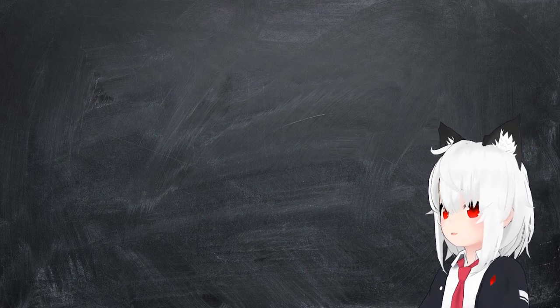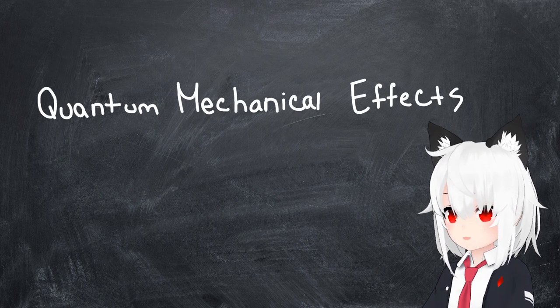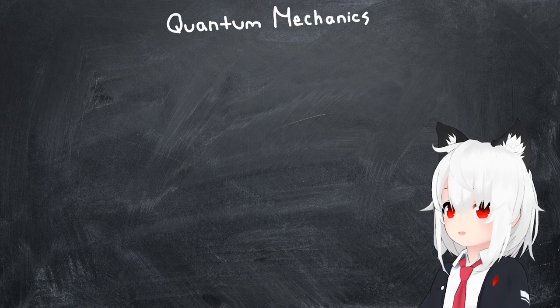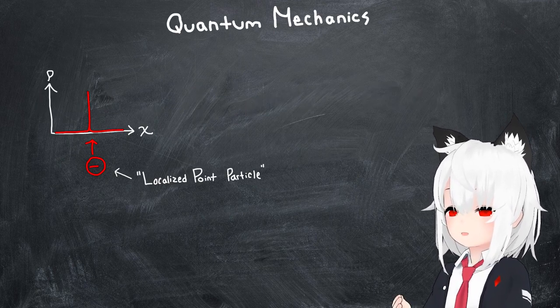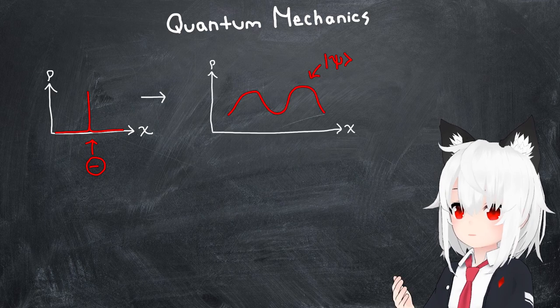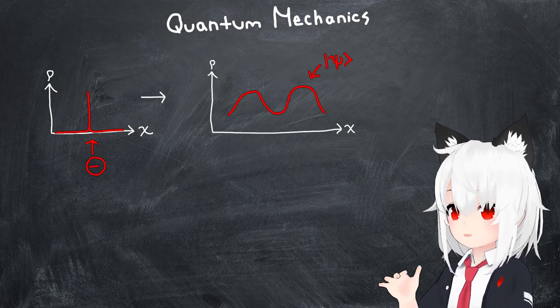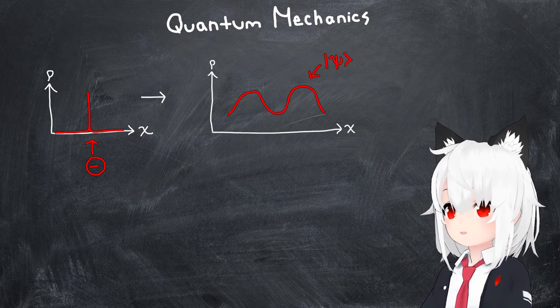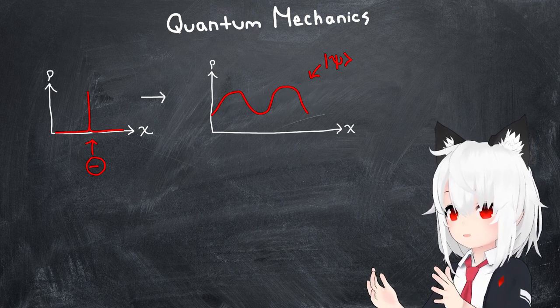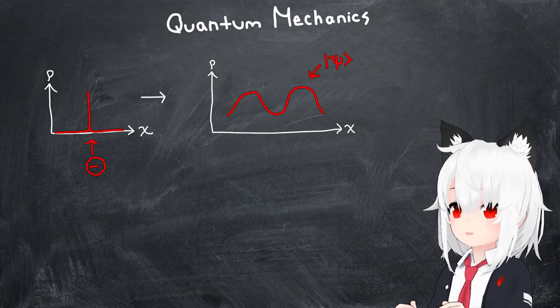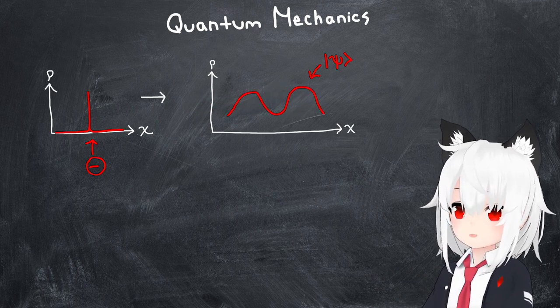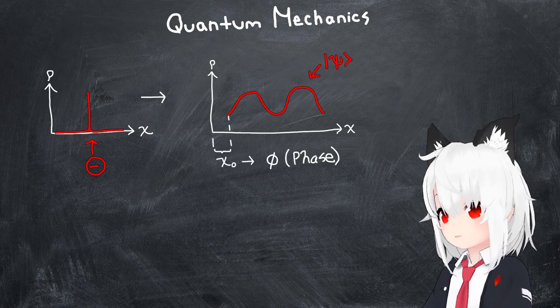Well, to understand this, we'll need to consider quantum mechanical effects. Quantum mechanics, as we know, extends the notion of a localized point particle to a more non-local, usually sinusoidal wave function. This wave function can shift around in space, and the precise value with which it shifts with respect to the origin is called the phase of the wave function.